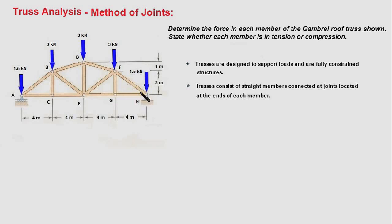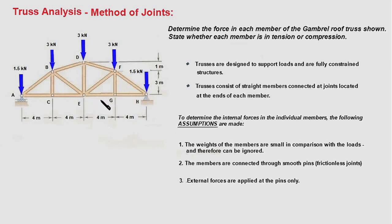In order to determine the internal forces of the members, we make certain assumptions. One: the weight of the members is much smaller in comparison to the loads, and therefore we ignore the weight of the members. Number two: the members are connected with frictionless pins so that there are no frictional forces involved. Number three: the external loads are always applied at the pins — not at some midpoint of a member. These three assumptions lead us to conclude that the members act like two-force members.